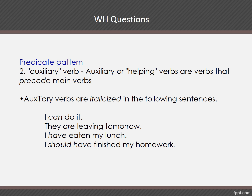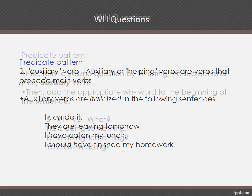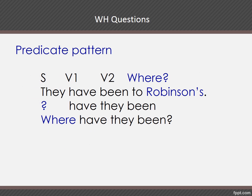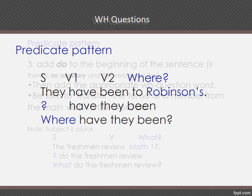For example: 'The meeting was in the afternoon' — expected answer 'in the afternoon,' so 'When was the meeting?' Now if you see that the sentence uses a verb phrase, meaning there's an auxiliary together with the main verb — for example, 'I can do it' with expected answer 'it' — so 'What can I do?' Or 'They're leaving tomorrow,' expected answer 'tomorrow' — 'When are they leaving?' Or for 'I should have finished my lunch,' expected answer 'my lunch' — 'What should I have eaten?' You have to split the auxiliary from the main verb: WH word, first auxiliary, subject, second verb. For example, 'They have been to Robinson's' — expected answer 'Robinson's' — 'Where have they been?'